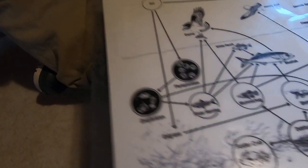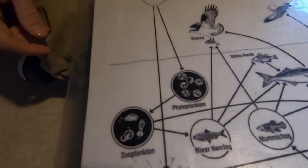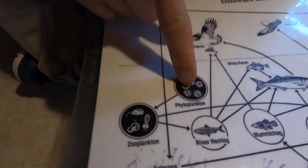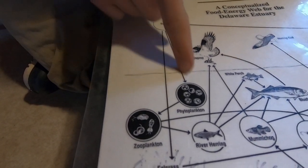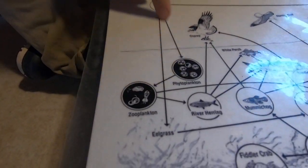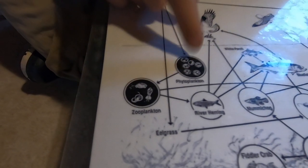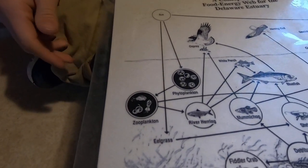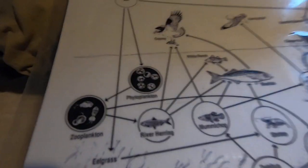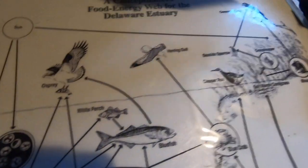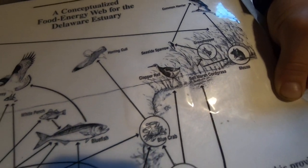As with any food web, the base of it is going to be phytoplankton, which get their energy from the sun directly. The other organisms that get their energy from the sun are of course plants that live on land, like grass and trees, which get their energy from the sun in order to produce oxygen through the process called photosynthesis.